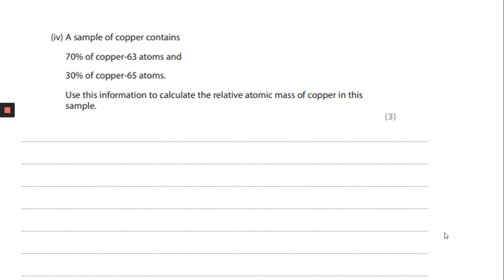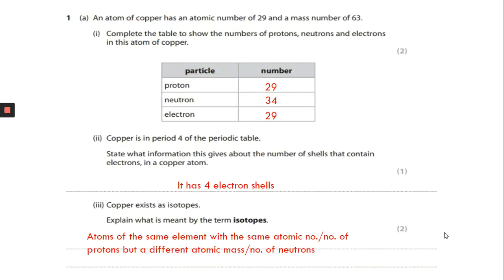So this is our second slide here. This one is where you need to work out the relative atomic mass of copper. It's giving you the abundances, it's giving you the mass numbers. It's a three mark question. So I want you to think about how we would actually work it out. How do I get those three marks?